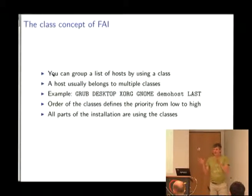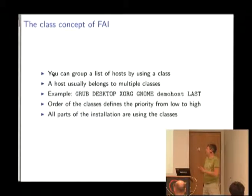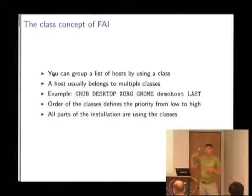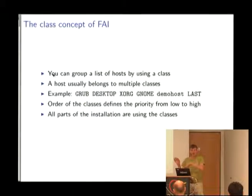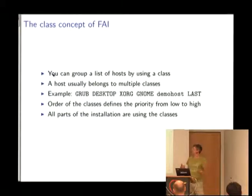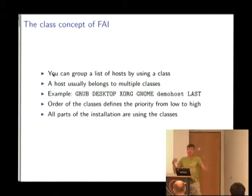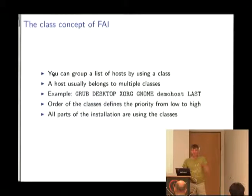The class concept of FAI: you can group several hosts by assigning a class to them, and a host usually belongs to many classes. Examples include classes like 'desktop' and 'gnome' — the names of the classes say what is done there. If my clients belong to the FAI class 'desktop', for me this means an XFCE desktop environment. We have an order in the list of classes so we can overwrite things. The 'gnome' class has information that overwrites the package list so the GNOME desktop will be installed instead. So we have a little bit of inheritance in the classes, and all parts of FAI use this class concept.